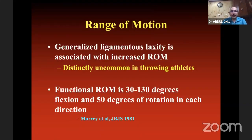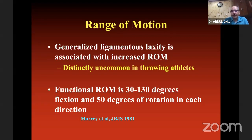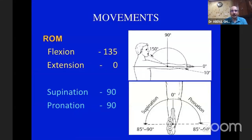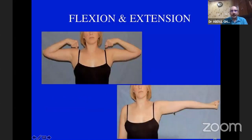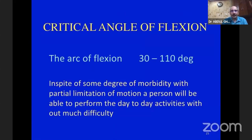The functional range of motion is 30 to 130 degrees of flexion-extension and 50 degrees of rotation in each direction. If limitation is within this range and there is no pain, the patient can get away without intervention. Supination and pronation: tuck the elbows on the side so that shoulder movement does not deceive the measurement, or ask the patient to keep the forearm on the table, hold a pin — that is the neutral position — and then supinate and pronate, noting the degrees. Functional rotation is 50 degrees in either direction.